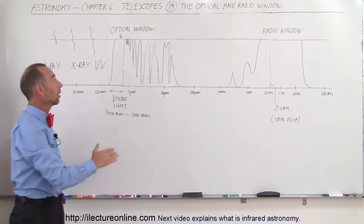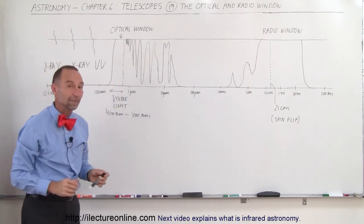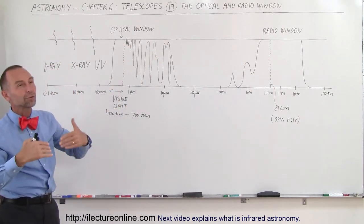Again, it's very dependent. A lot of this blocking is due to water vapor in the atmosphere. The higher you go, the less water vapor, the better you can see. But you can see that it does appear in a lot of different wavelengths.